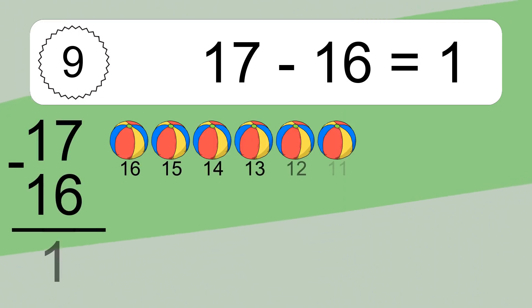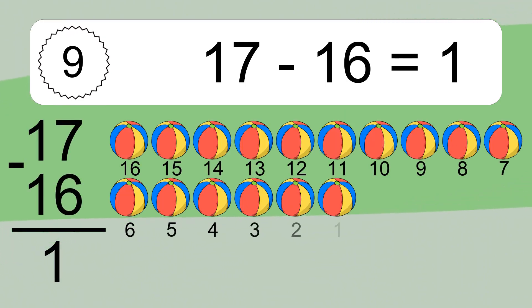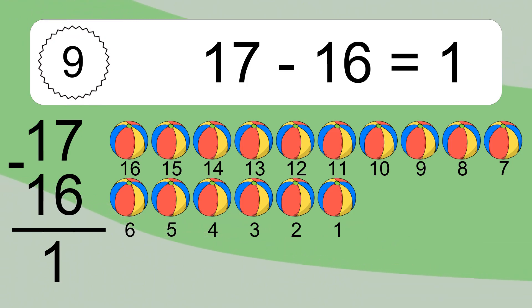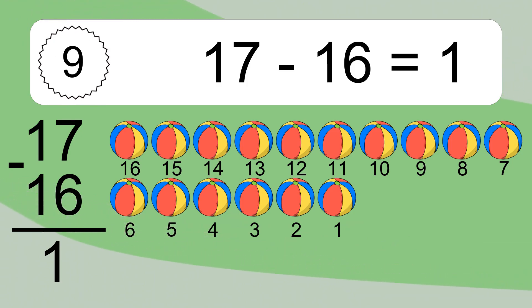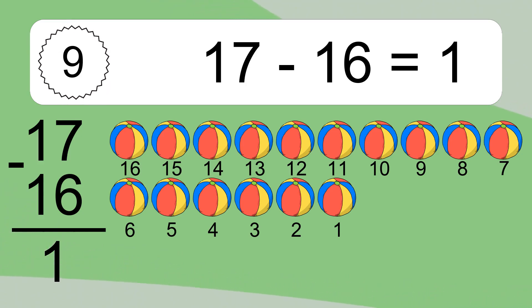17 minus 16 equals 1. Let's count it. 16, 15, 14, 13, 12, 11, 10, 9, 8, 7, 6, 5, 4, 3, 2, 1.